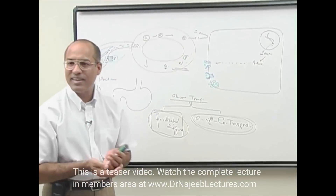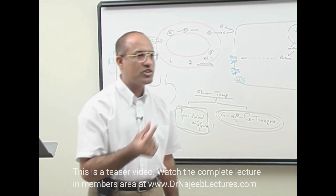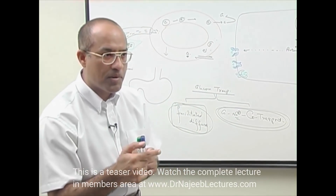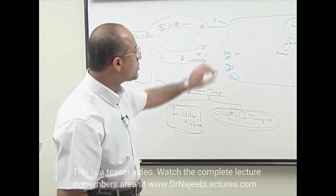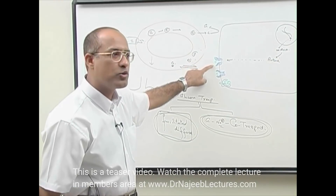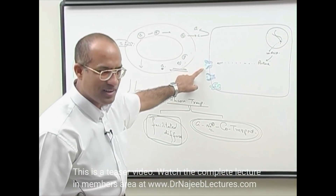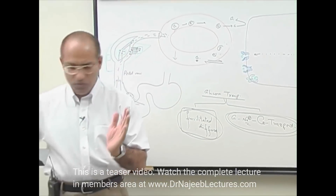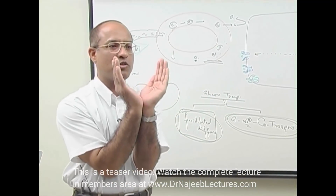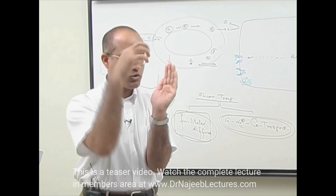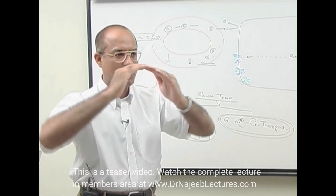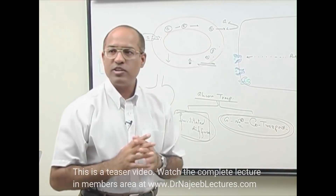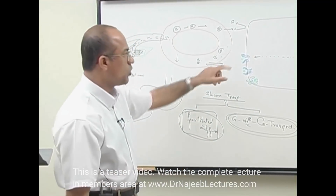This transmembrane protein goes through and through the membrane and has the capability to alter its shape. When it is not loaded with glucose, the protein looks like this. As soon as glucose sits here, it opens like that. This is the basic way how these glucose transporters work.